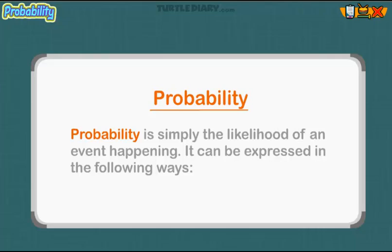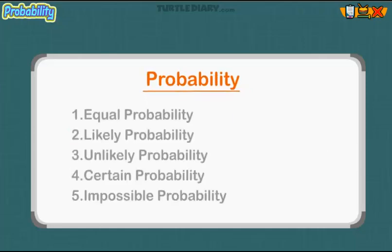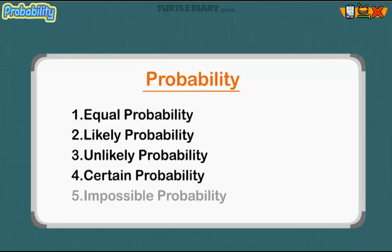Probability is simply the likelihood of an event happening. It can be expressed in the following ways: equal probability, likely probability, unlikely probability, certain probability, and impossible probability.